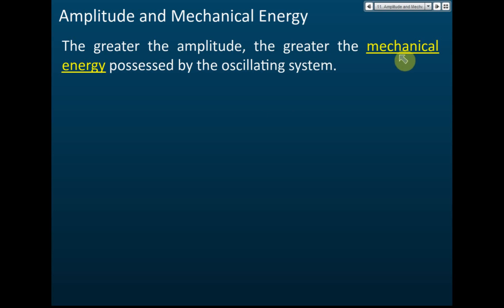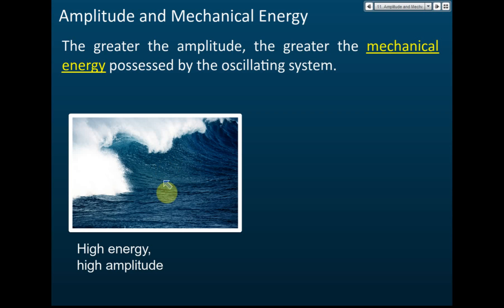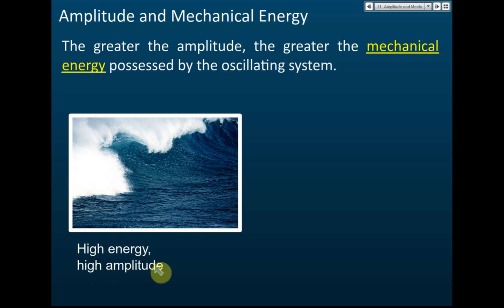If the oscillating system contains a lot of mechanical energy, the amplitude will be very large; if it contains a small amount of energy, the amplitude will be small. For example, this wave here has a very high amplitude, which means the mechanical energy — the kinetic and potential energy — stored in this wave is very high.